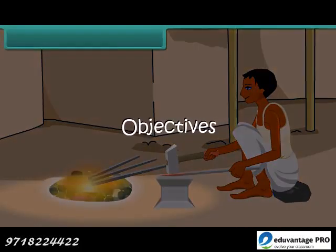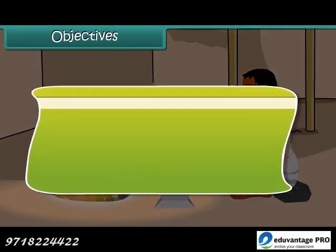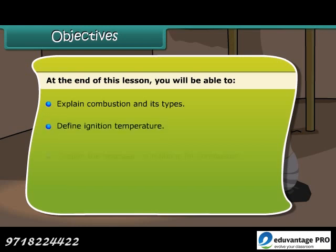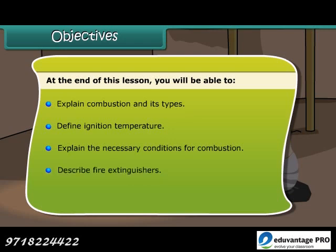Objectives: At the end of this lesson you will be able to explain combustion and its types, define ignition temperature, explain the necessary conditions for combustion, describe fire extinguishers, and list types of combustion.